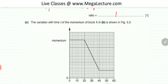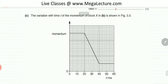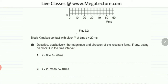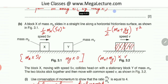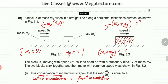The next part concerns the variation with time t of the momentum of block X, shown in a graph. Initially, block X had higher momentum. Block X makes contact with block Y at t = 20 milliseconds. Before collision, block X was traveling in a straight line on a frictionless surface, so its momentum was constant — meaning no change and thus no net force acting on it.